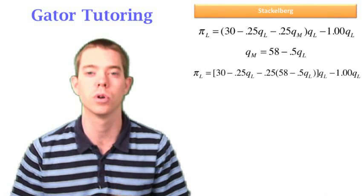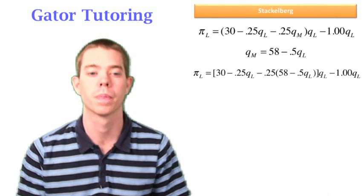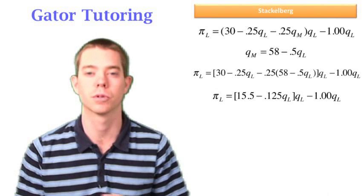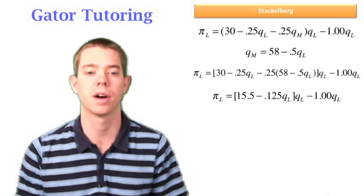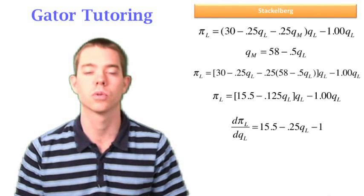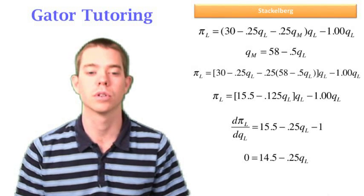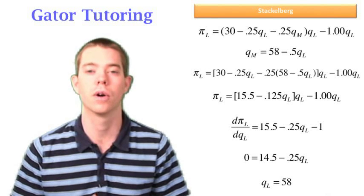And we see that now we have just one variable and we'll be able to solve for Ql once we take the derivative of this with respect to Ql and set it equal to zero. So we simplify this down first, take the derivative, set it equal to zero, and we can solve for Ql equals 58.